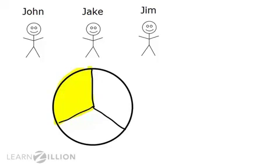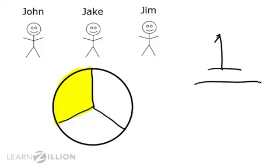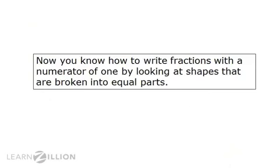I would start by writing the numerator. The numerator is just the part we are thinking about, and since John only gets one piece, the numerator is one. Then I need to draw my line. Next, I would need to write the denominator, or the total number of parts. There are three equal parts in this cake, so I would write three. The fraction of the cake that John gets is one-third. Now you know how to write fractions with a numerator of one by looking at shapes that are broken into equal parts.